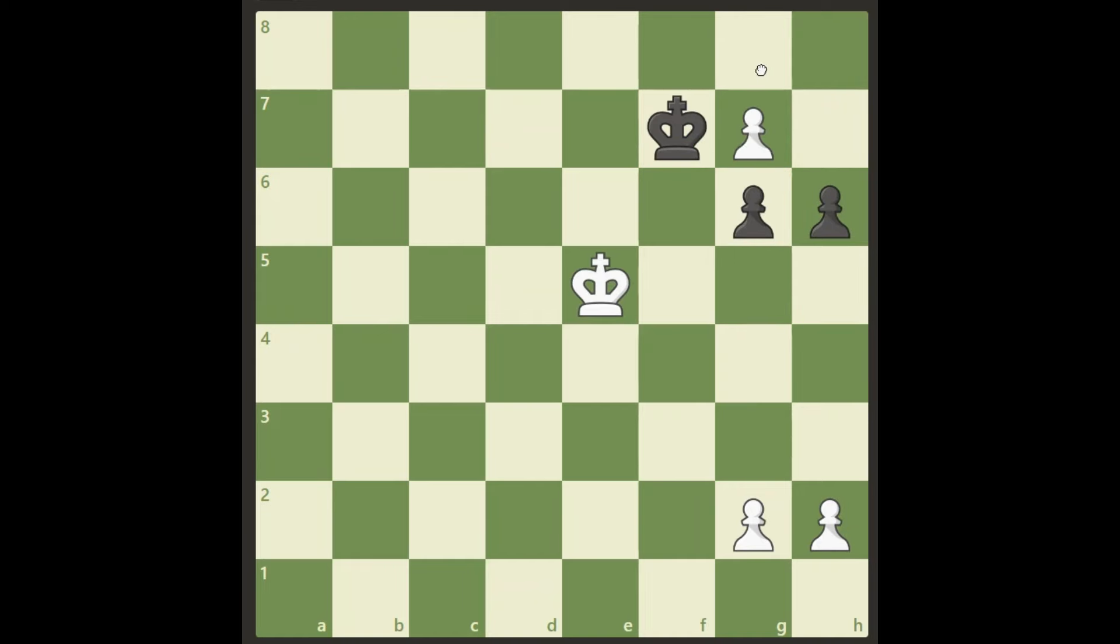And if we play king f7 here, it's also too slow. Black will again play h5 with the same idea, escape his king to h6 and at the right moment push g5.